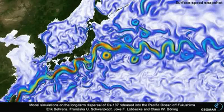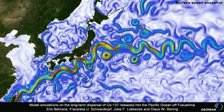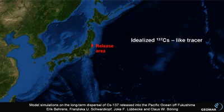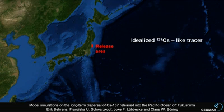The model simulates the ocean currents with very high resolution, and thus captures much of the intense eddying flows along the Kuroshio. To simulate the dispersal of the contaminated water by the ocean currents, we use an idealized tracer behaving like a dye with a half-life of 30 years, which we injected into the coastal waters of Fukushima.